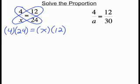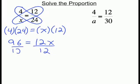4 times 24 is 96. x times 12 is 12x. Now we just solve for x, so we divide both sides by 12.